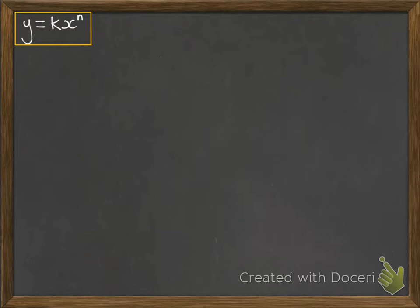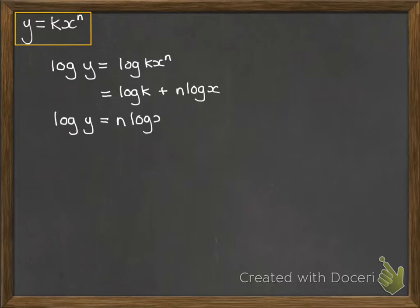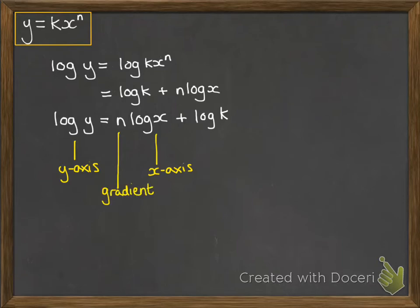If we follow this through taking log of both sides and then simplifying those logs, then we get log y equals n log x plus log k. Now that actually could be mapped onto a graph where log y would be put on the y-axis, log x would be put on the x-axis, and then n would be the gradient and log k would be the y-intercept. In other words, it would look like y equals mx plus c, a straight line.